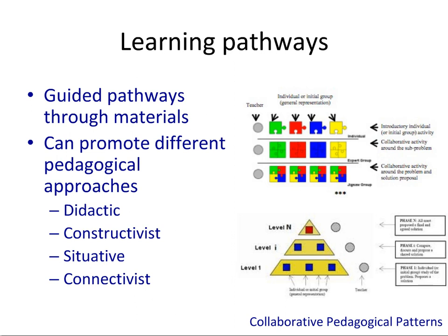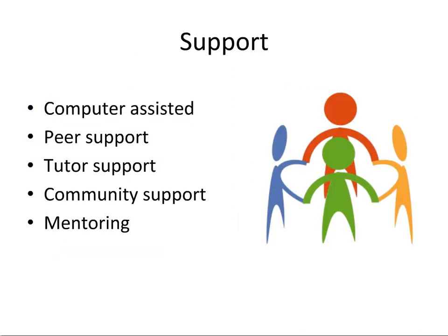The second component of disaggregation is the notion of learning pathways. Yes, anything you want to learn is available freely on the internet. But many learners would rather have guided pathways created by somebody they consider an expert in the area. These guided pathways can promote different pedagogical approaches. For example, the jigsaw puzzle approach divides a problem into four parts; people go off and research their problem, come together with others who've researched the same problem to share knowledge, and then go back to the home team and combine their findings — a very effective, time-trusted mechanism for fostering collaboration.